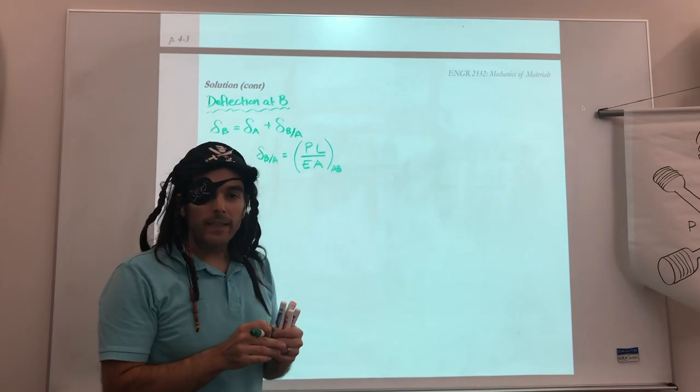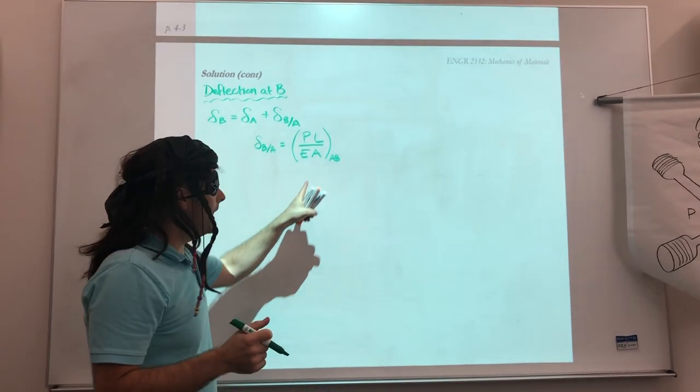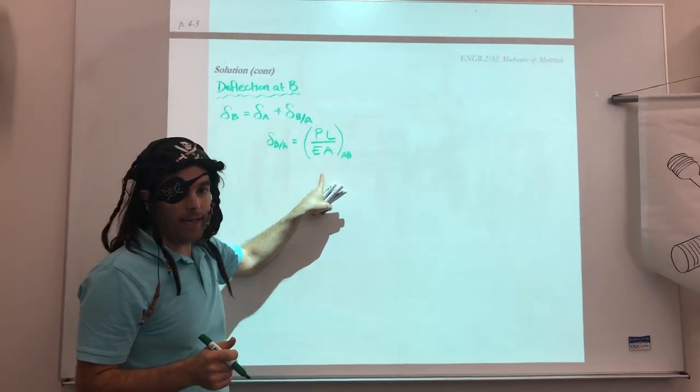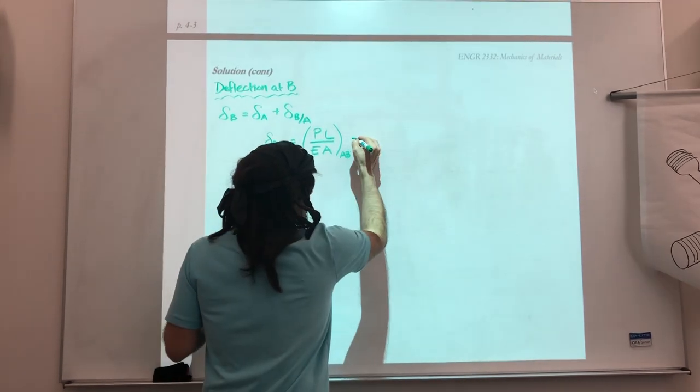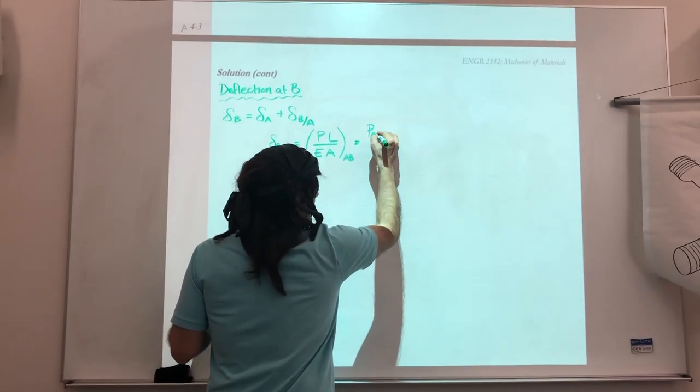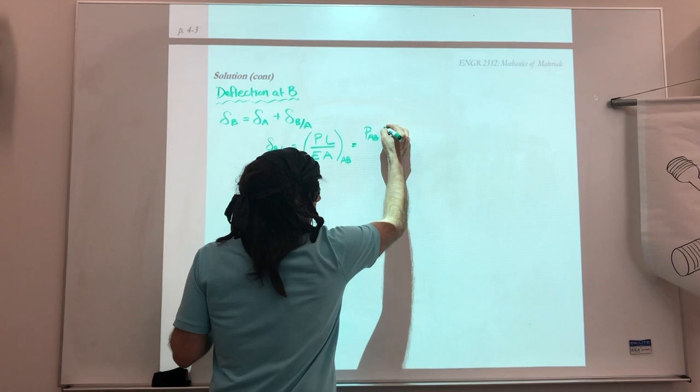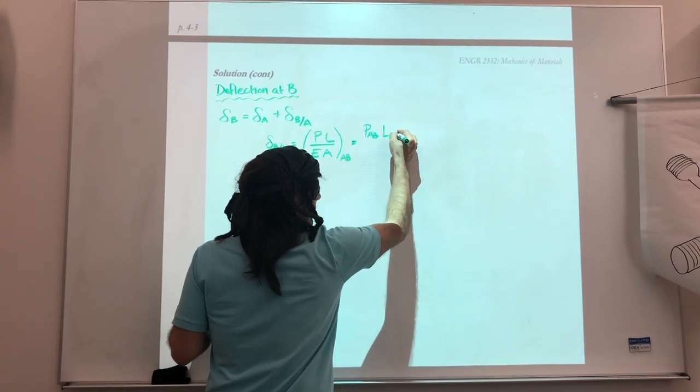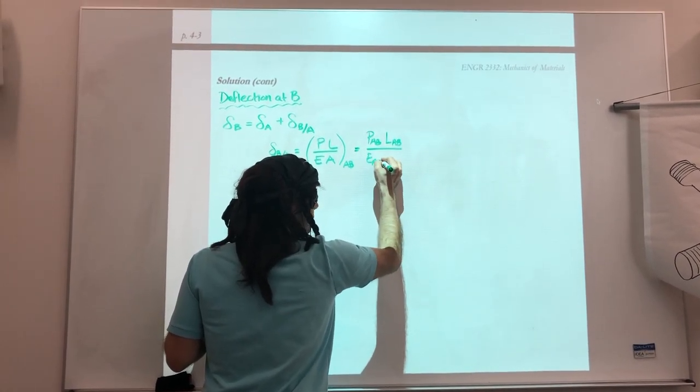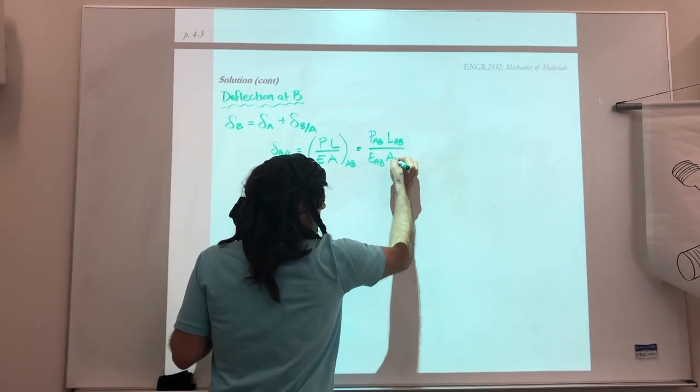Now this delta B relative to A is the value we want to calculate. So we know that delta B relative to A is equal to PL over EA for segment AB. And so this is Hooke's law. And so all we have to do now is plug in the values for PL, E, and A. So more specifically, force the axial force in AB, the length of AB over EAB, AAB.